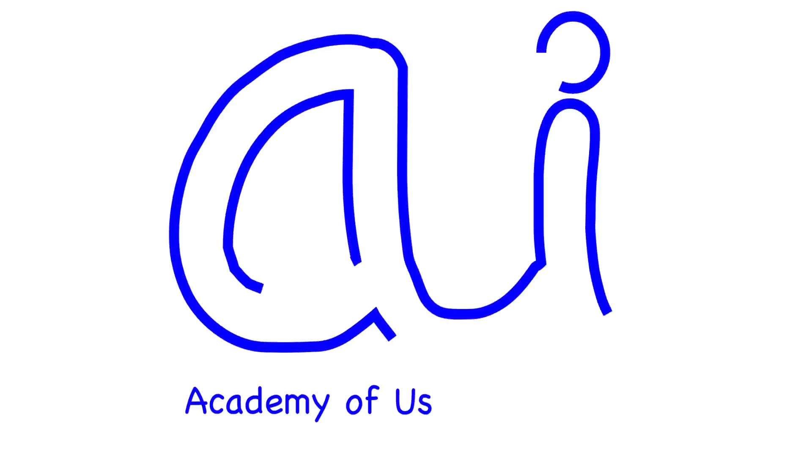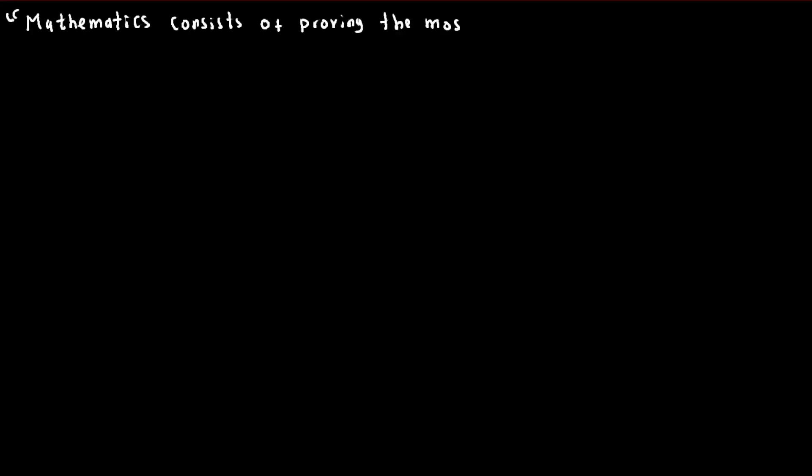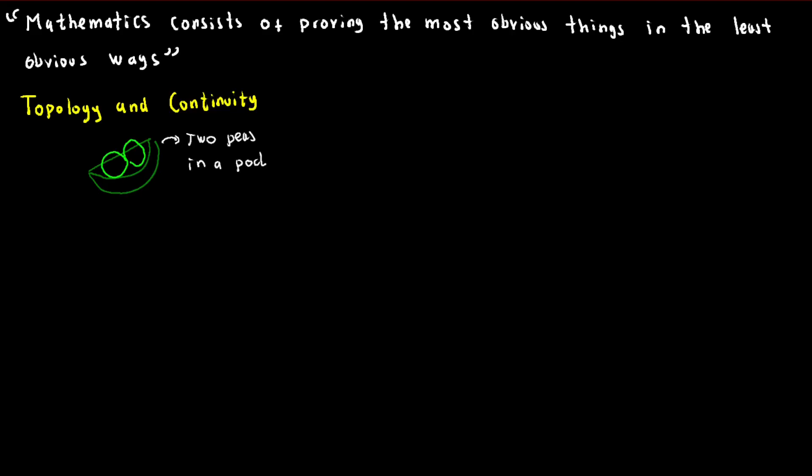Hello, and welcome to the Academy of Useless Ideas. Today we are taking a deep dive into the juicy details of topology and continuity. These two concepts are like peas in a pod, peanut butter and jelly, or even Batman and Robin. They just belong together.